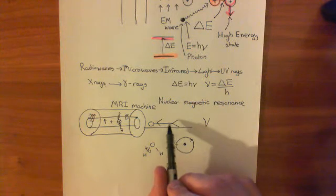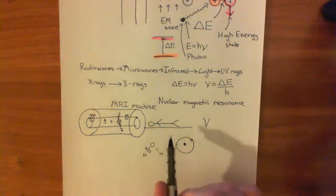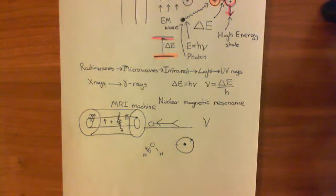And then what you can build up is a 3D picture which shows you the density of water in this human being. And that's what an MRI image shows. It shows you the density of water at each point of the human body.